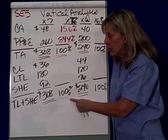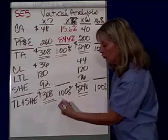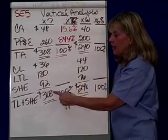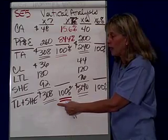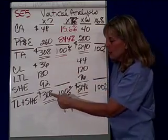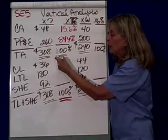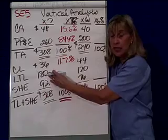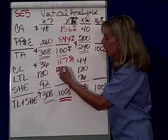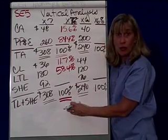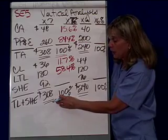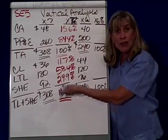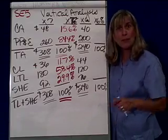Likewise, if I look at liabilities and stockholders' equity, we know that total liabilities plus stockholders' equity has to equal 100%. That means I will express each one of these elements as a fraction of total liabilities. Current liabilities of 36,000 divided by 308,000 means current liabilities are about 11.7% of the total. Long-term liabilities — 180,000 divided by 308,000 — is 58.4%. And stockholders' equity — 92,000 divided by 308,000 — is 29.9%. That's nice that we've broken down X7 as proportions, but it really helps if you have something to compare it to.